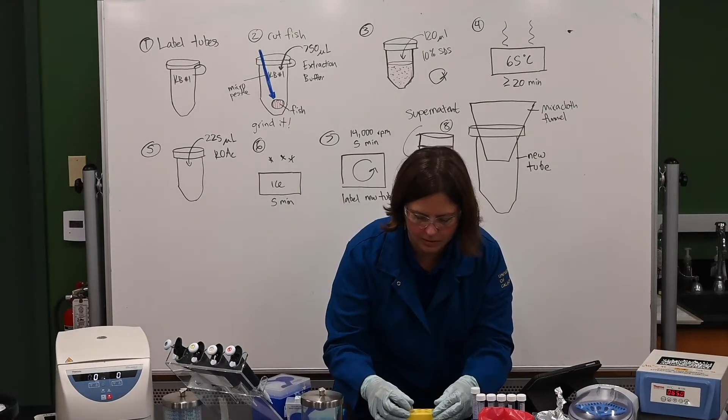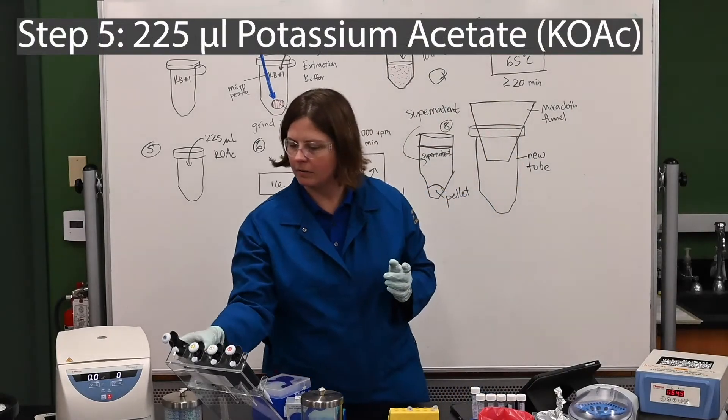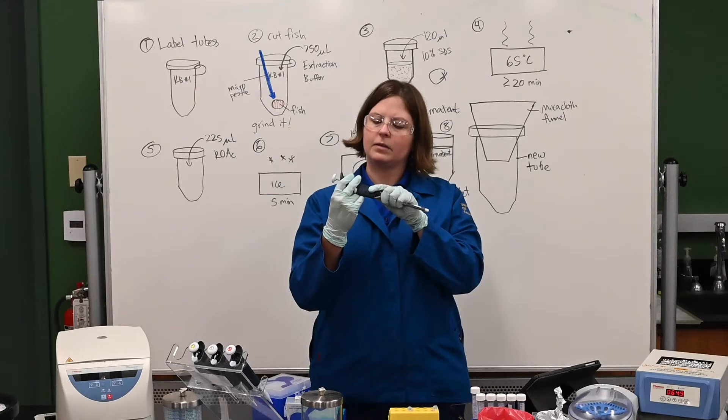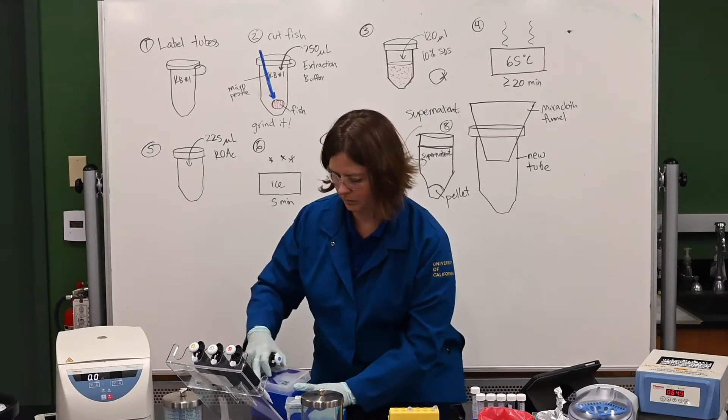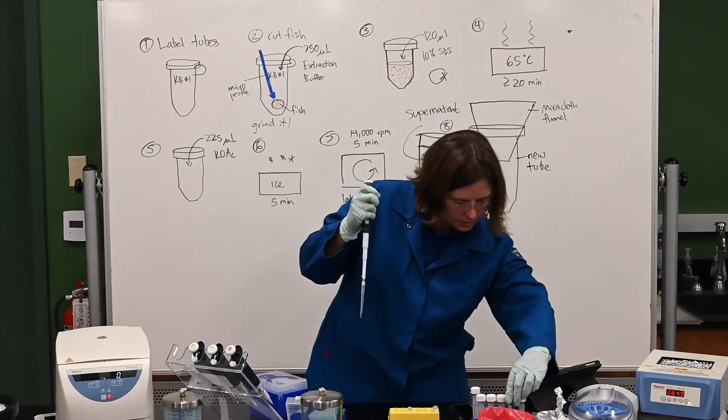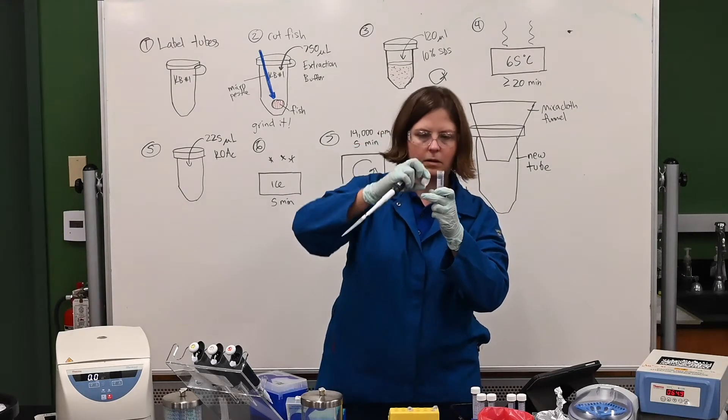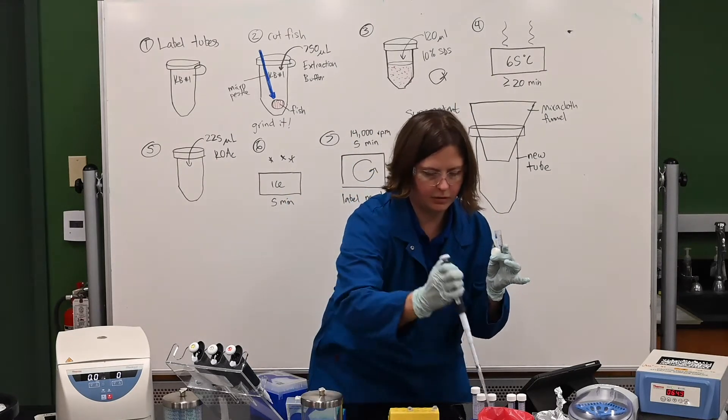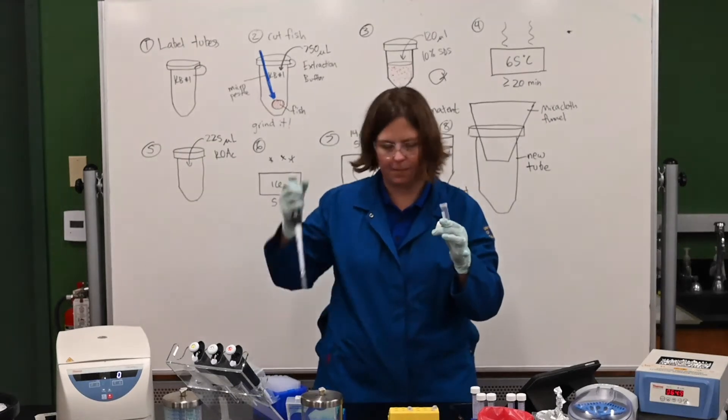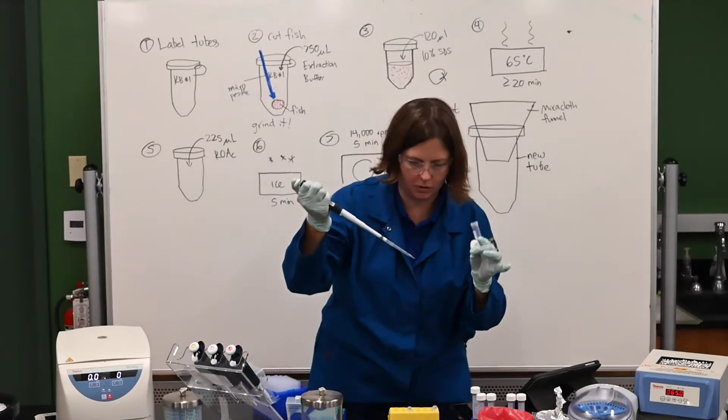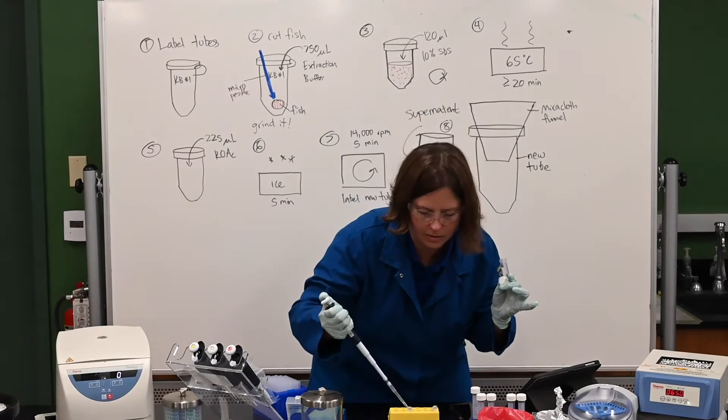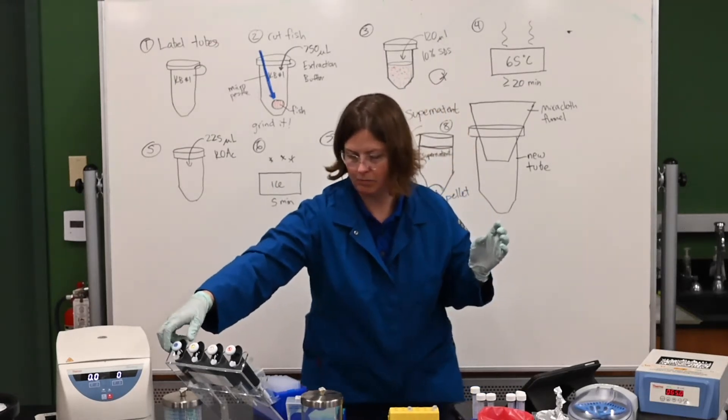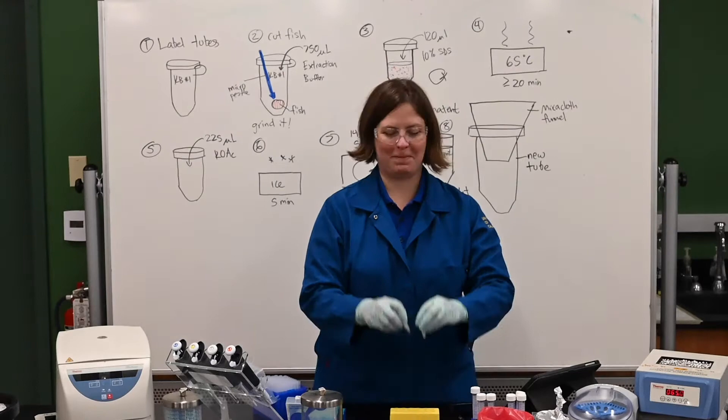225 of potassium acetate. So I'm going to change my P1000 down to 220. The hardest things in science is learning how to do all these things with just two hands. When you're starting out, it's like, I feel like I need a third hand. One to take the cap off, one to hold the micropipette, one to hold the tube. You get better with practice. This is fun for me. I haven't done bench work science in months. So this is really fun for me to get back in the lab and actually be able to do stuff.